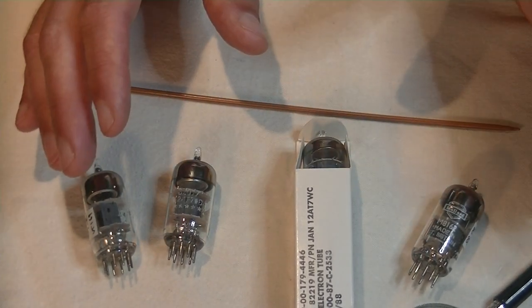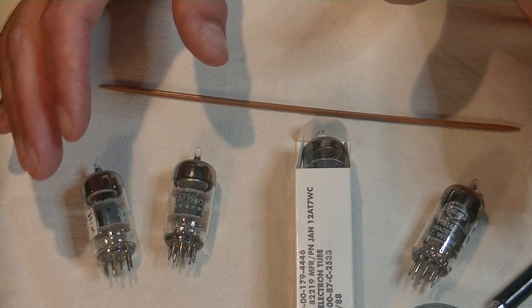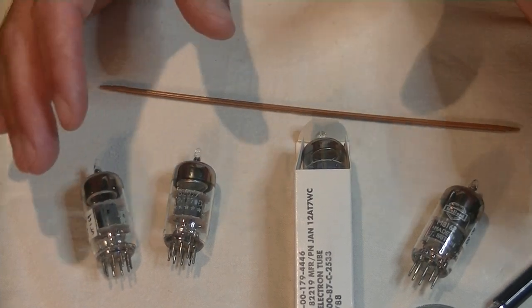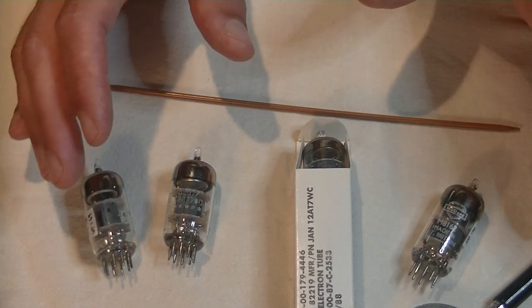The 12AT7 is a medium gain, miniature dual triode, with an MU or gain of 60. The 12AX7 has a gain of 100.